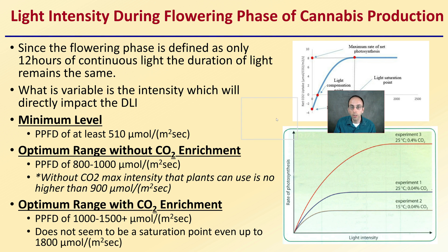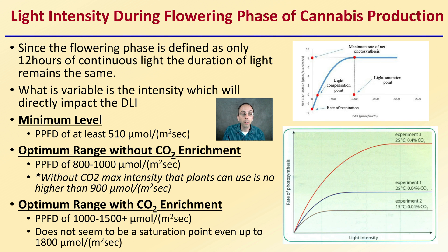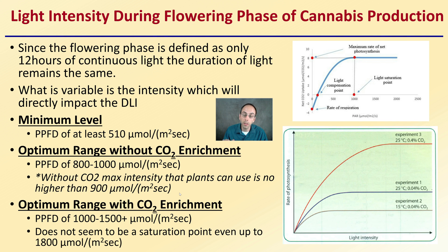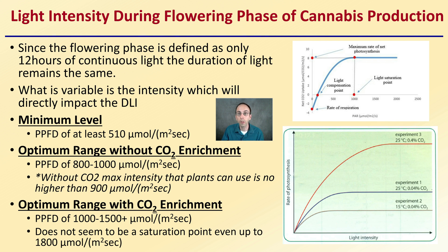Light intensity during the flower phase: that critical flowering phase is defined by a fixed 12-hour continuous light duration. What's variable is the intensity. The minimum light level is a PPFD of at least 510 micromoles per meter squared per second. The optimum range without CO2 enrichment is 800 to 1,000 micromoles — without CO2, maximum usable intensity is capped around 900 micromoles. With CO2 enrichment, 1,000 to 1,500-plus micromoles can be used, with no apparent saturation point even up to 1,800 micromoles. Natural sunlight is 2,000 micromoles, so beyond that would likely be excessive.